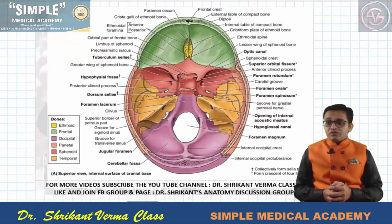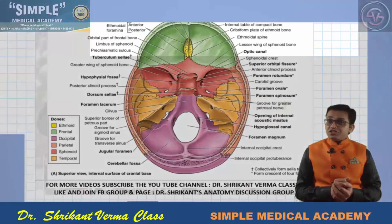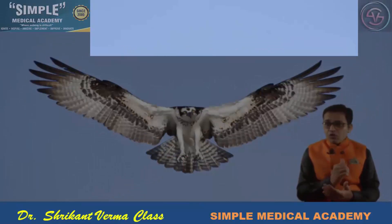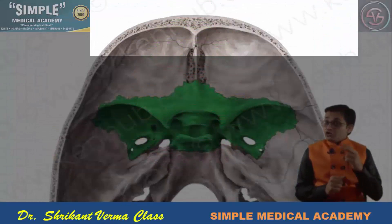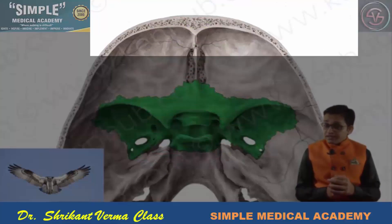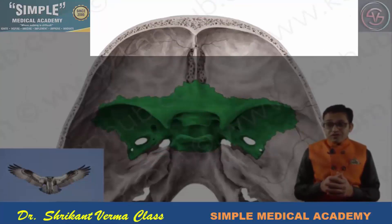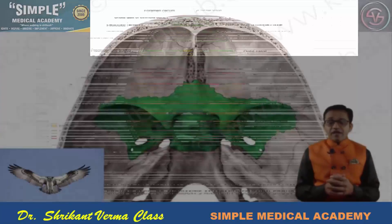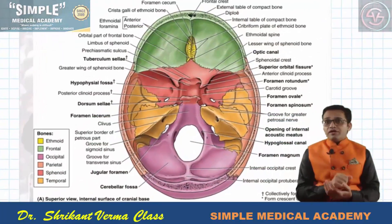Now we are going to see about the sphenoid bone. The sphenoid bone appears just like a bird, having wings and a central part. This sphenoid bone has two wings: the small wing known as the lesser wing and the large wing known as the greater wing, and the central part is known as the body.